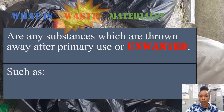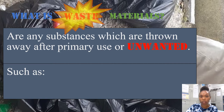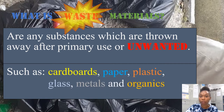So, what are waste materials? Waste materials are any substances that are thrown away after primary use or unwanted, such as cardboard, paper, plastic, glass, organics, and metal. There are also two other special forms of waste, known as e-waste and hazardous waste.